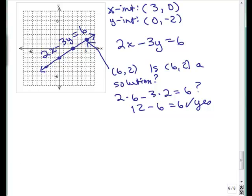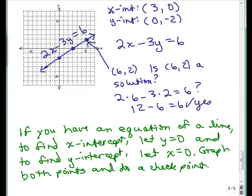So, if you have an equation of a line, to find the x intercept, let y equal 0. You're going to get an ordered pair. And then, to find the y intercept, let x equal 0. Get a different ordered pair. Graph both points and do a checkpoint.